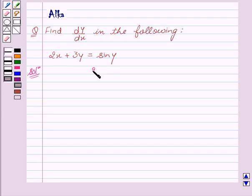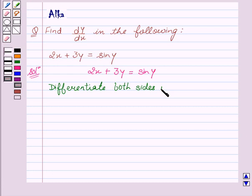Our given equation is 2x + 3y = sin y. Now we differentiate both sides with respect to x.